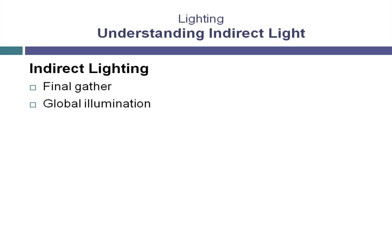Both forms of indirect light calculation provide the ability to calculate what is called color bleeding. This is when light striking the surface of a certain color picks up that color and transfers it onto the next surface.